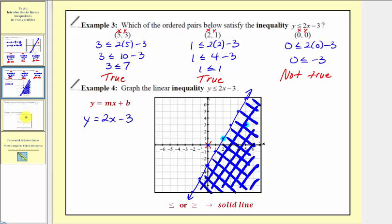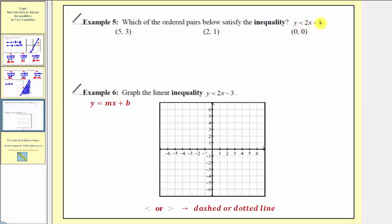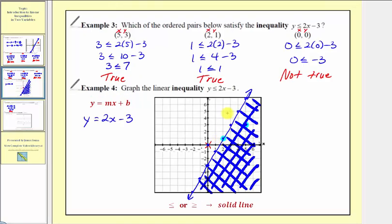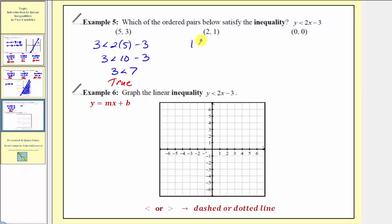Now let's look at a similar example, but with y less than two x minus three — a strict inequality. Substituting five for x and three for y: three less than seven, which is true, so that ordered pair satisfies the inequality. For two comma one — the point on the line — we have one less than one, which is not true. One is not less than one, so the ordered pair two comma one does not satisfy this inequality.